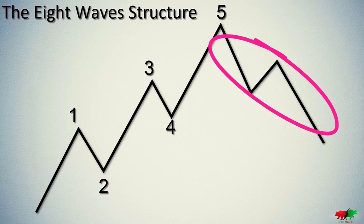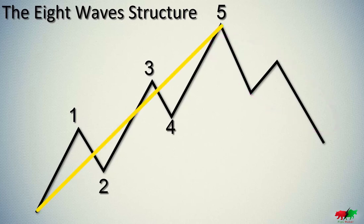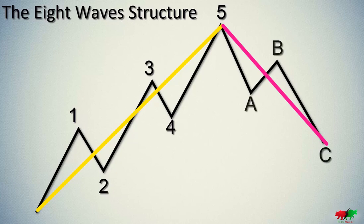The full cycle we call the eight-wave cycle consisting of one impulse wave of the five-wave formation and one corrective wave, which we call the three-wave formation. The waves of the corrective formation we mark with the alphabet letters ABC.